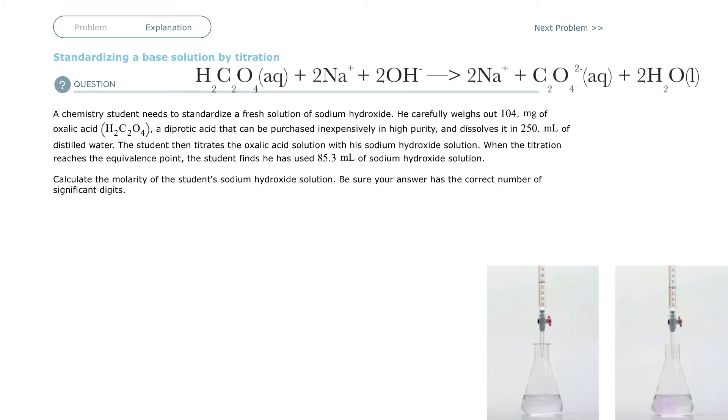In titration, you usually have some kind of solution, either an acid or a base, that you don't know the concentration of. You don't know what its molarity is. You know how much it is - you know that you put 10 milliliters or 100 milliliters. You know its volume, but you don't know its molarity.